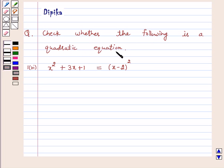Check whether the following is a quadratic equation: x squared plus 3x plus 1 equals x minus 2 the whole squared.